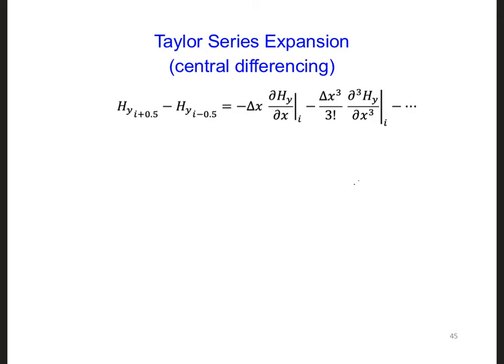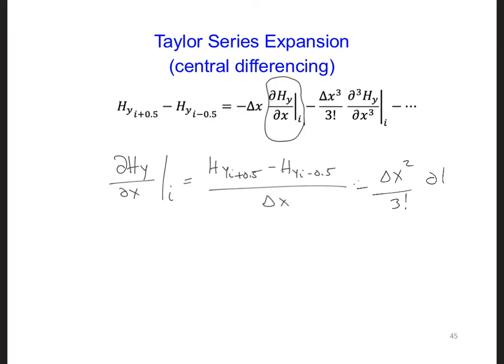So now if we solve for this term, we're going to get dHy/dx at i is Hy i+0.5 minus Hy i-0.5 over Δx, and then minus Δx squared, and then we have the third partial derivative with respect to x of Hy, and there's more stuff here that's at position i.